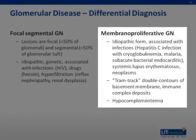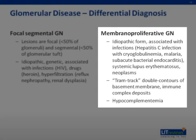Membranoproliferative glomerulonephritis is also a descriptive term of a histopathologic entity. Underlying causes are infections, neoplasms, or systemic lupus erythematosus. The histopathologic changes consist of hypercellularity and the characteristic double layers of the basement membrane due to interposition of mesangial cells through immune complex deposits.